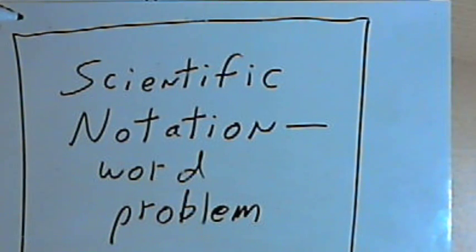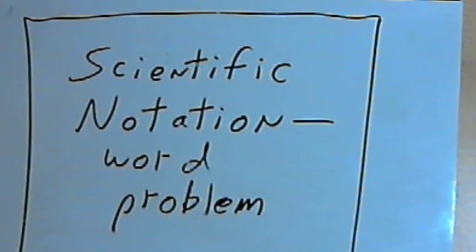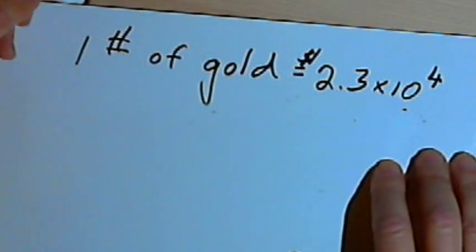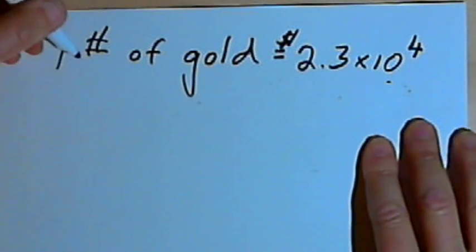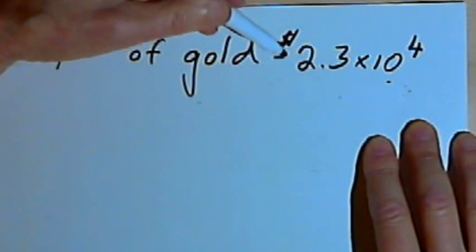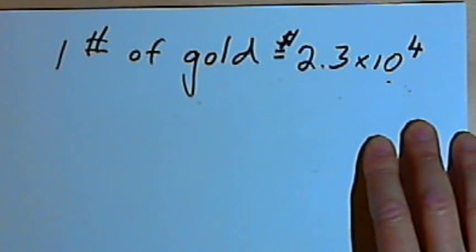This video is going to be about solving a word problem using scientific notation. So here's the problem. I'm going to start out with a basic fact. One pound of gold is worth approximately 2.3 times 10 to the fourth dollars.